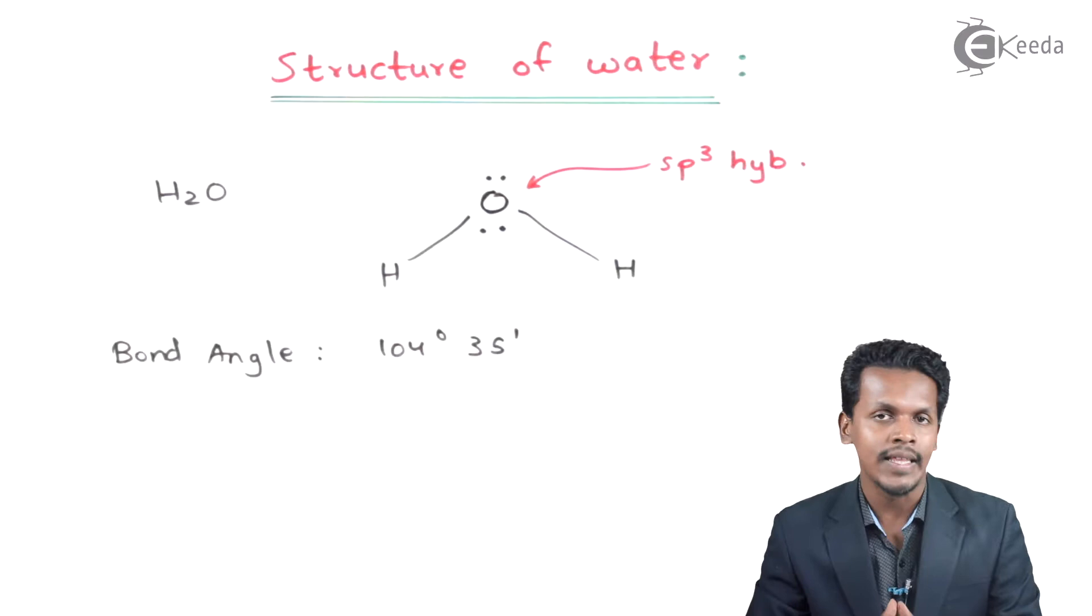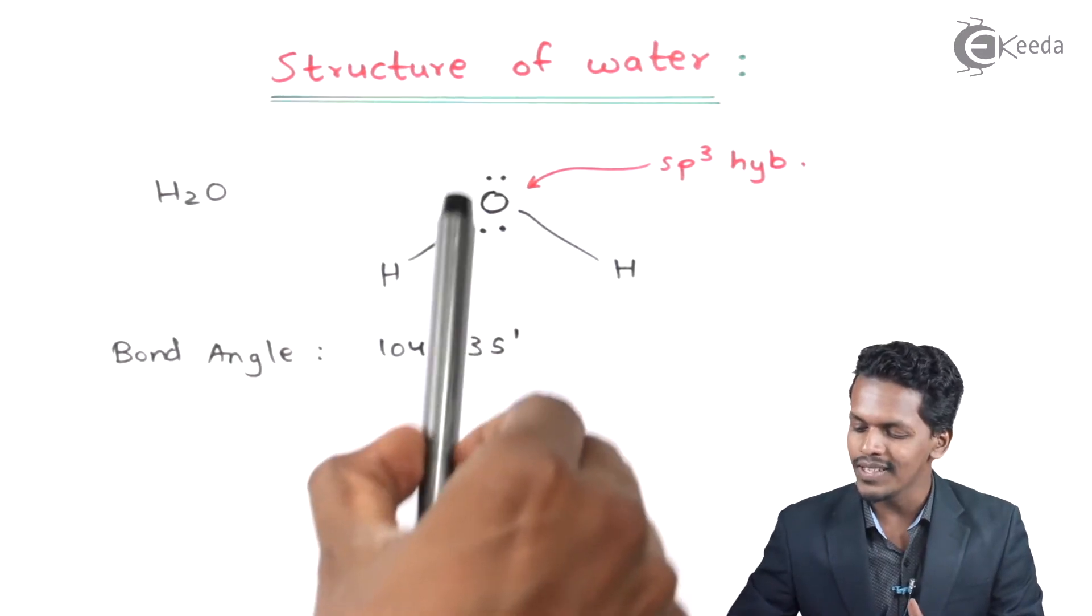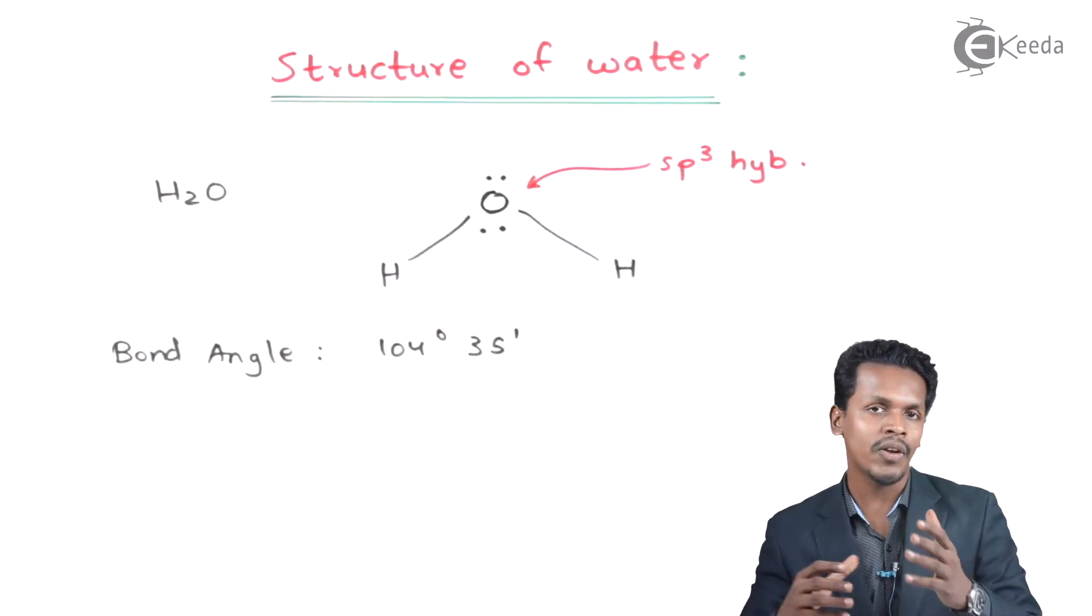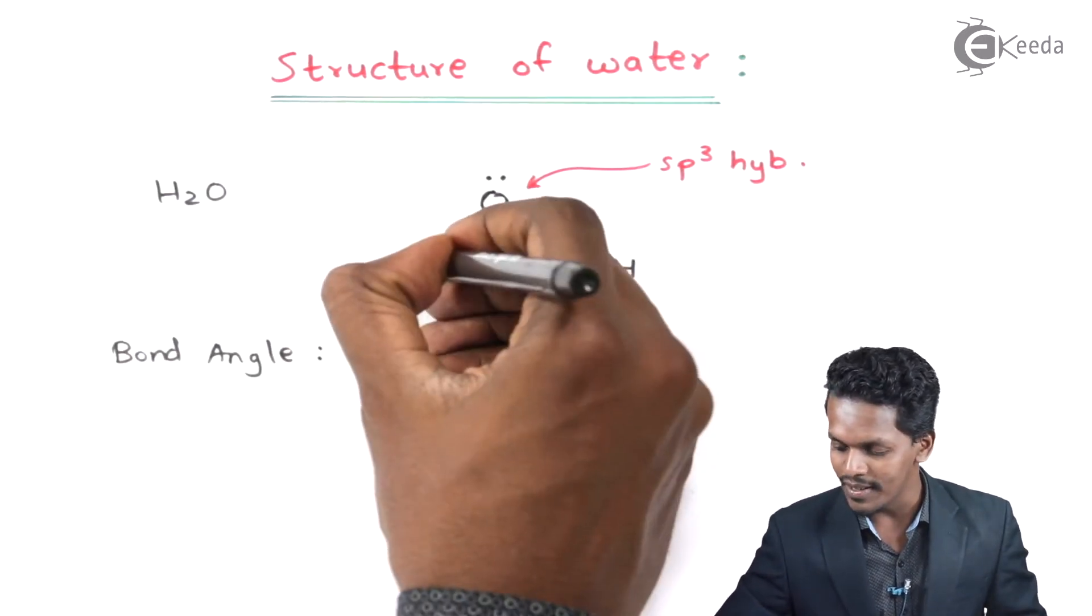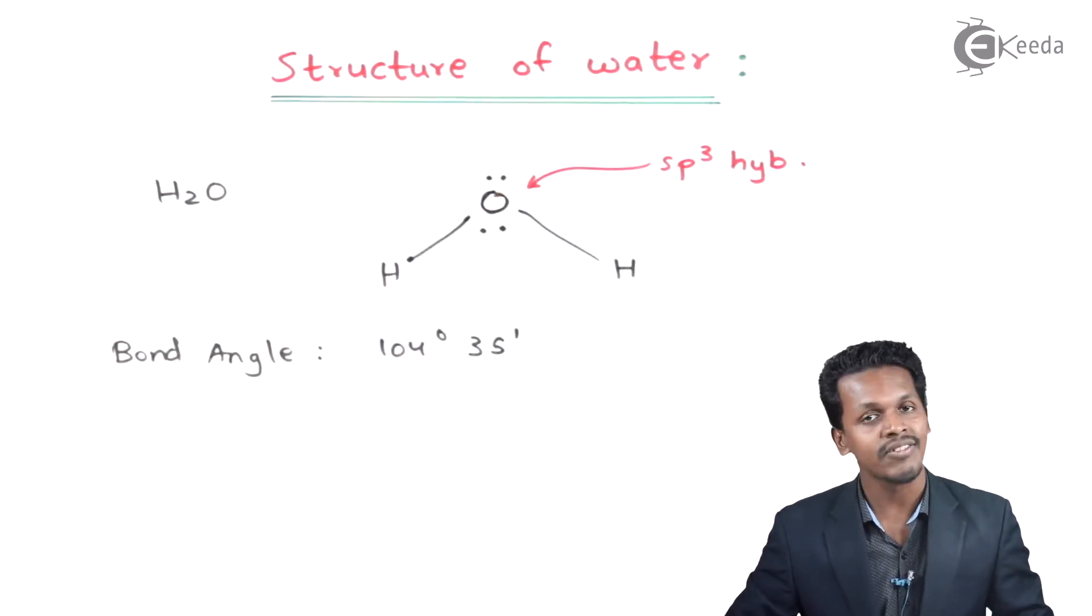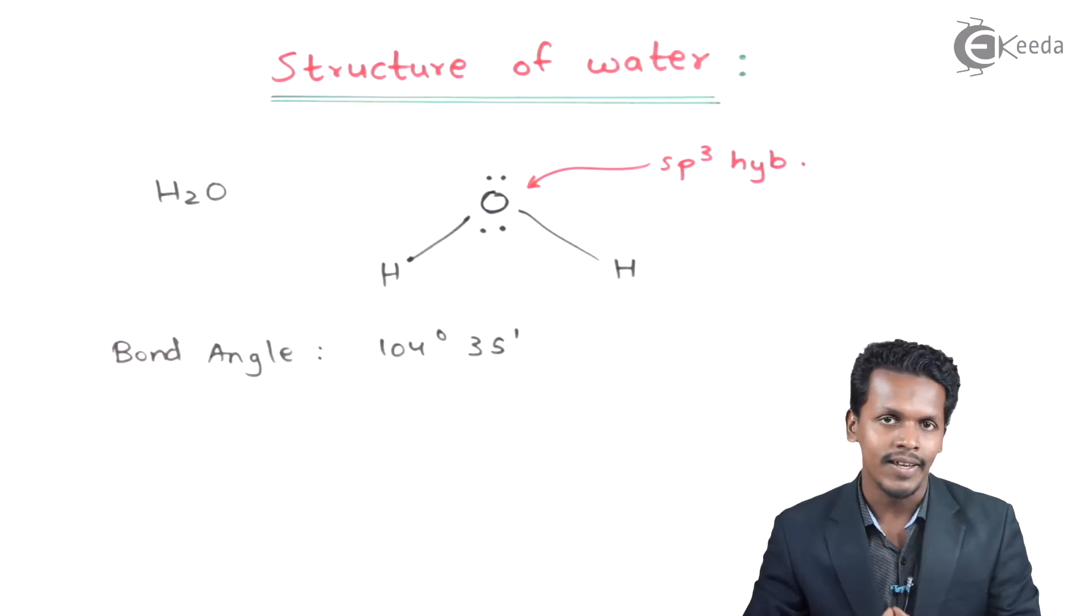This decrease in the bond angle is because of the presence of these lone pairs of electrons. These lone pairs have a repulsion towards the bonding pairs between hydrogen and oxygen, and that's why the bond angle decreases from 109 to 104 degrees 35 minutes.